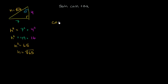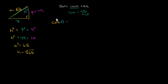Let's find the cosine of our angle. The CAH part of SOHCAHTOA tells us that cosine is adjacent over hypotenuse. Looking at theta, the hypotenuse is the long side, so the adjacent side — the one right next to the angle that isn't the hypotenuse — is 4. The hypotenuse is the square root of 65. So cosine of theta equals 4 over the square root of 65.